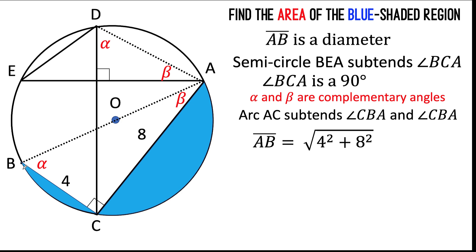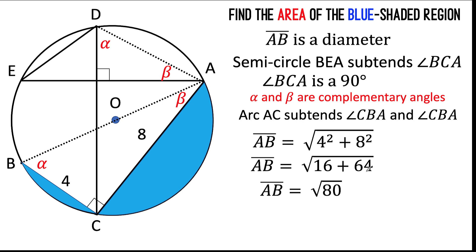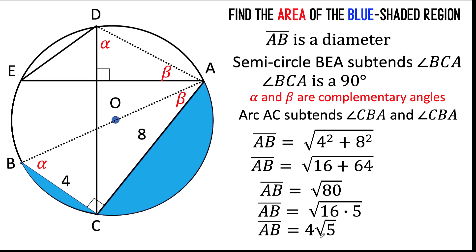From the Pythagorean formula, the length of diameter AB equals the square root of the sum of the squares of the two shorter sides: 4 squared plus 8 squared. Solving: 4 squared is 16, 8 squared is 64, and 16 plus 64 is 80. So the length of segment AB is the square root of 80. Since 80 equals 16 times 5, the square root of 16 is 4, giving us 4 square root of 5. The diameter is 4√5, which means the radius is one-half of that, so the radius is 2√5.